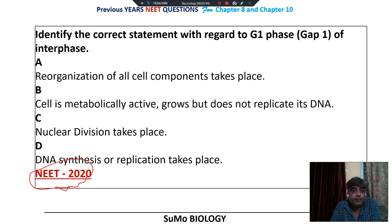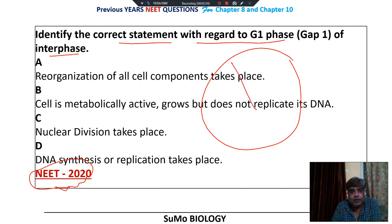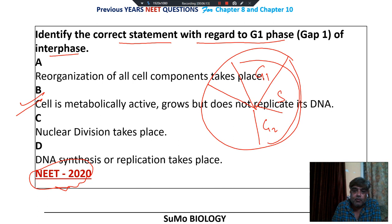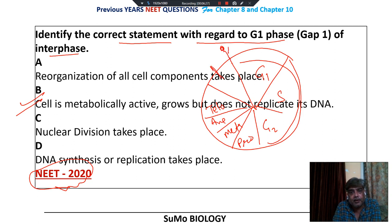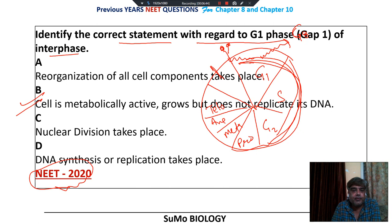In G1 phase, the cell is metabolically active but does not replicate its DNA. Option number B is the right choice. The interphase consists of G1, S, and G2, followed by M phase. M phase divides into karyokinesis and cytokinesis. Karyokinesis is further divided into prophase, metaphase, anaphase, and telophase. At the end of cytokinesis, the parental cell divides into 2 daughter cells, which then enter G1. The cell is metabolically active and grows but does not replicate its DNA. Option number B.